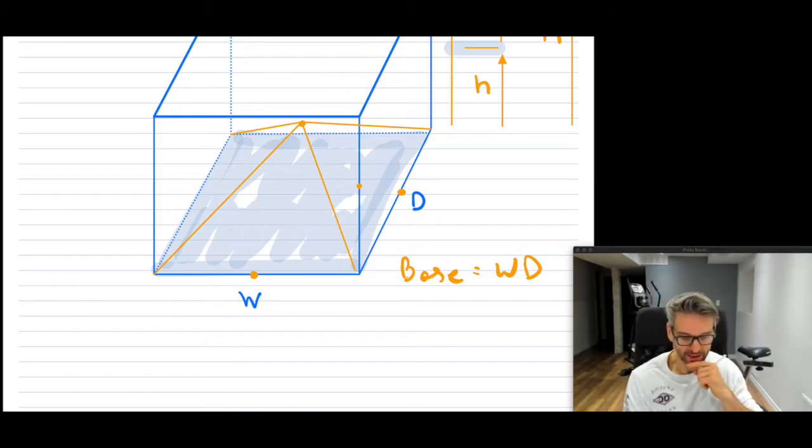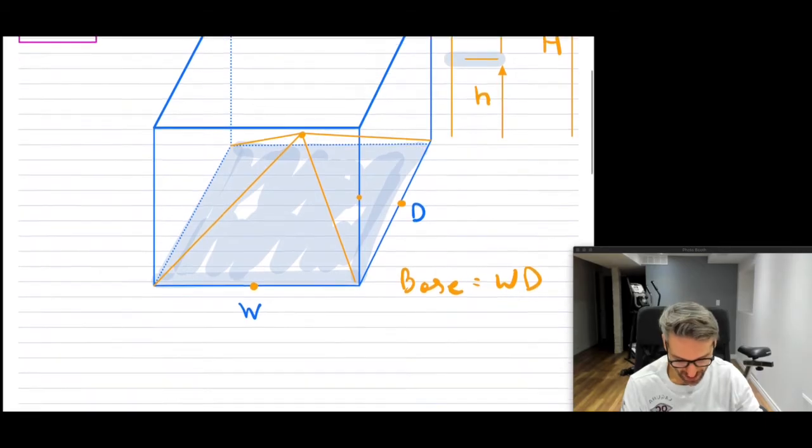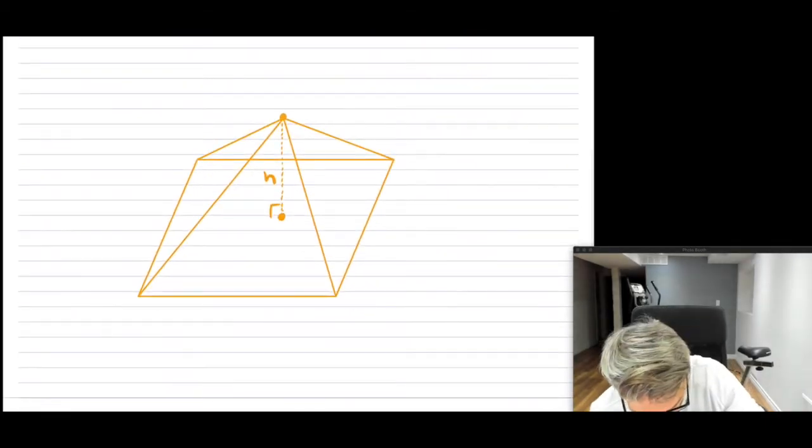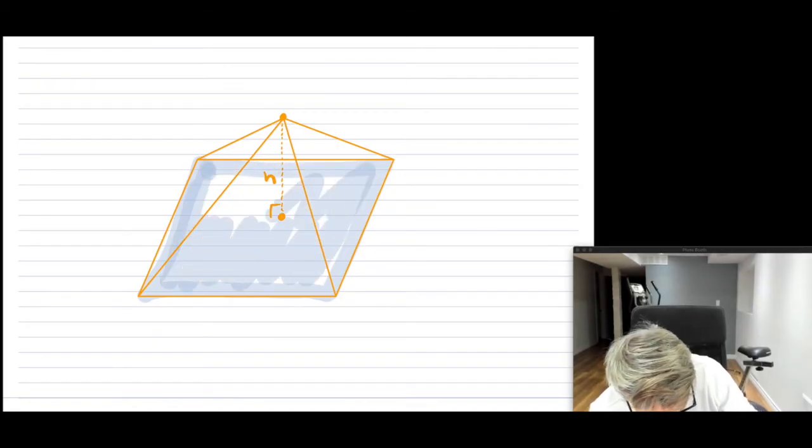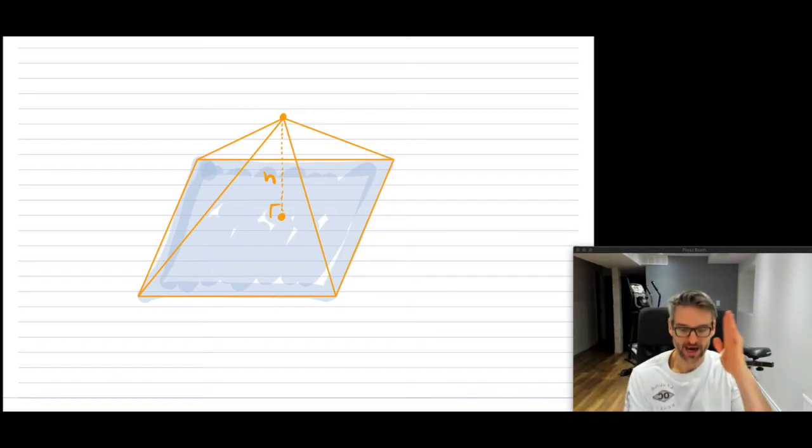All right, now because I'm assuming that it's a cube, they're basically the same, but I still want to keep it as width times depth, just so that you understand what that base is. So I have a base. So my base of the pyramid, that's this entire area right here, and then I have the height.